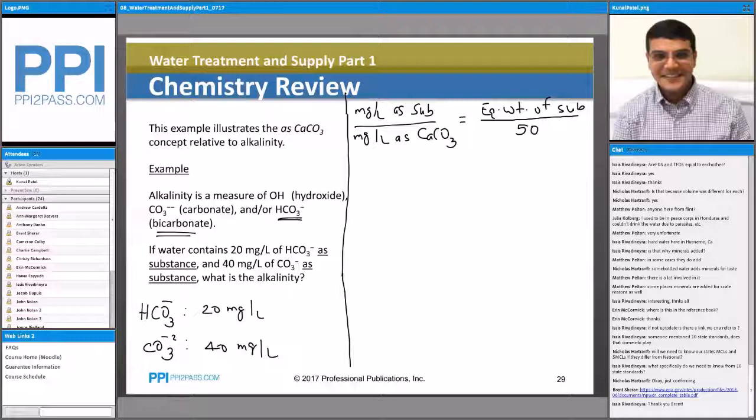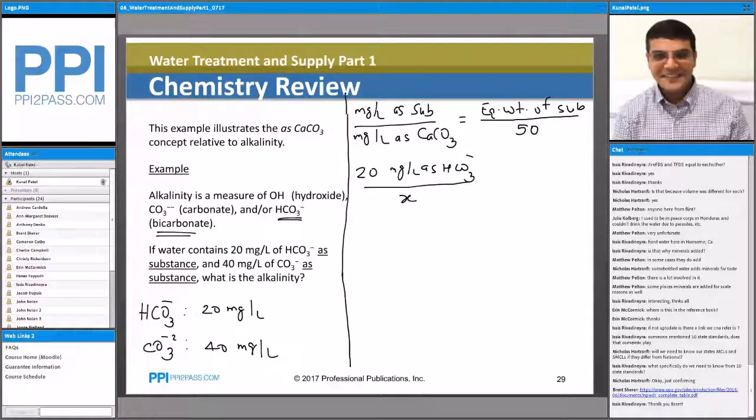So in our given example, we have 20 milligrams per liter as HCO3. And I'm interested in the concentration as calcium carbonate. So the equivalent weight of bicarbonate ion, HCO3, I need to calculate that. I know it's 61, but just so we know how to get it: 1 plus 12 plus 48, which gives me 61. And charge is minus 1 on this. Equivalent weight is 61 over 50. And then I get the value of X: 50 times 20 divided by 61. So it gives me 16.4 milligrams per liter as calcium carbonate.